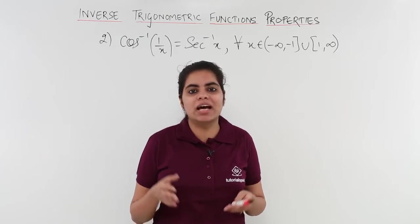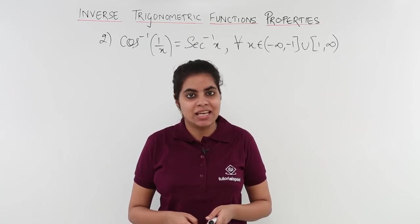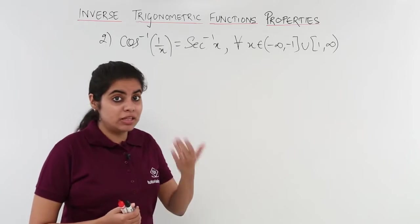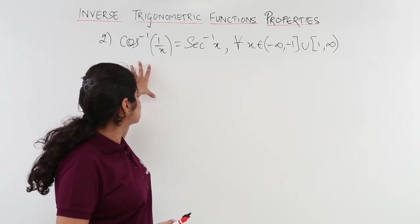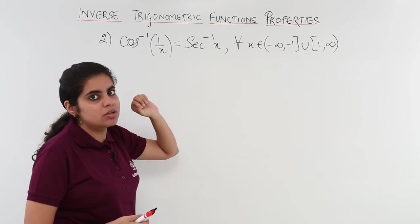We already know that sin inverse 1 by x is equal to cosecant inverse x in the previous video. In this video we have the proof of the next set: cos inverse 1 by x is equal to secant inverse x.